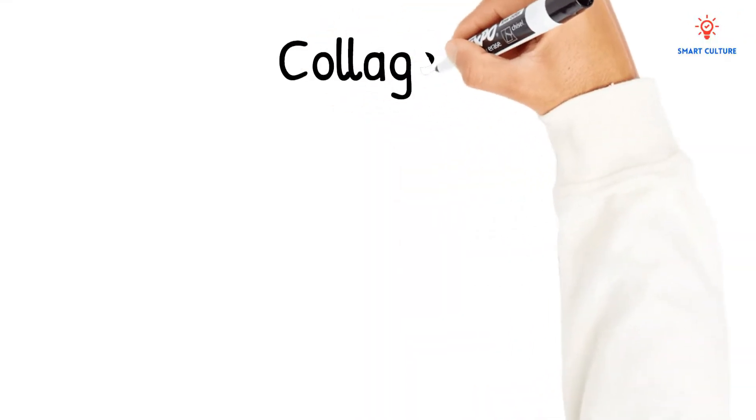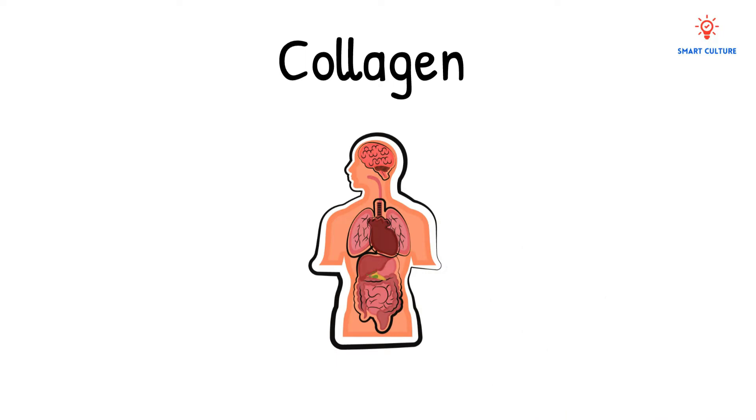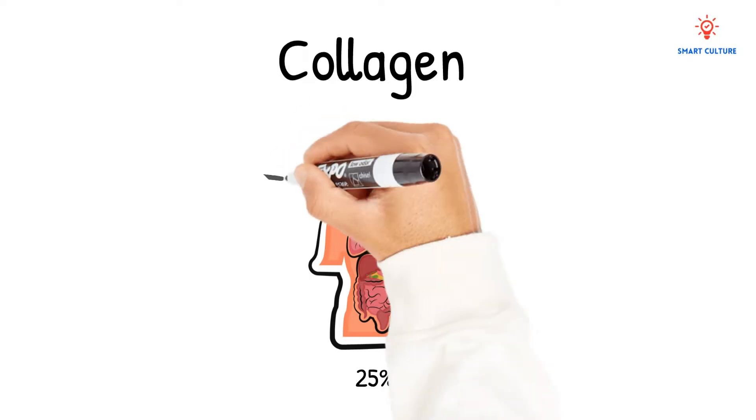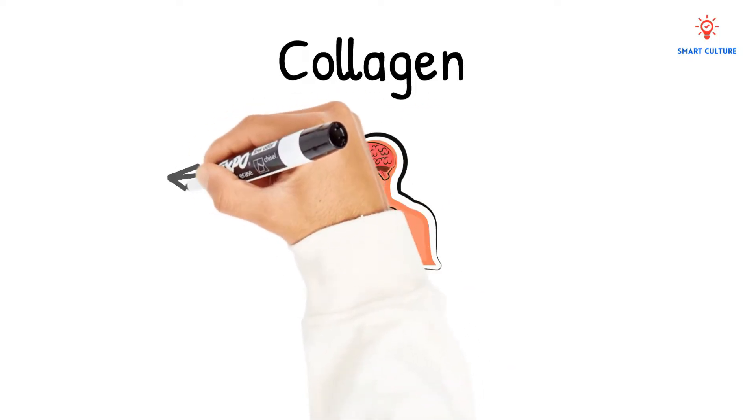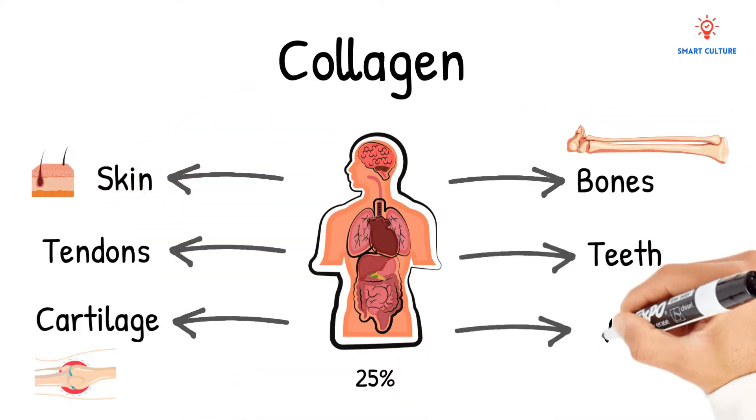Did you know that collagen is the most common protein found in humans? It makes up 25 percent of the total protein in our bodies. This insoluble fibrous protein can be found in the skin, tendons, cartilage, bones, teeth, and the walls of blood vessels.